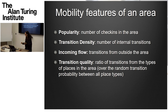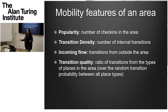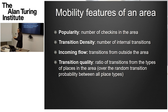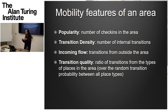The mobility features are: popularity — how many check-ins does the area have, which is a dynamic way of seeing density; transition density — how many transitions there are inside the area, representing how connected it is; and transition quality — who are the contributors to the check-ins we have. Where do you check in before? How many of these contributors are in fact in this area? These are the dynamic counterparts to the static geographic metrics.